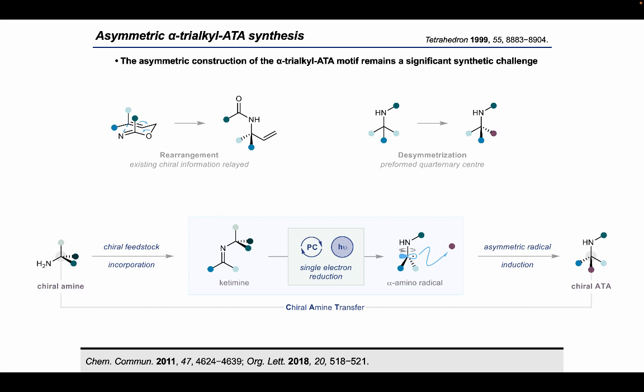More recently it has been shown that ketimines can be used to generate alpha amino radicals via photoredox-mediated single electron reduction. These intermediates have seen great utility in the construction of alpha tertiary amines but are difficult to control in terms of their stereochemistry. We questioned whether the incorporation of a chiral amine into the ketimine precursor could allow a transfer of chirality from the amine starting material to the alpha tertiary amine product.